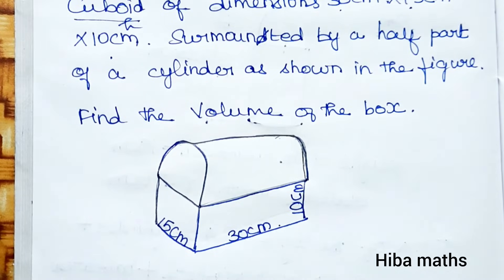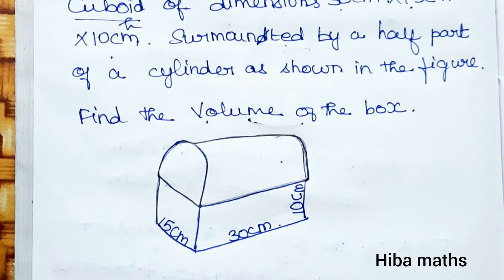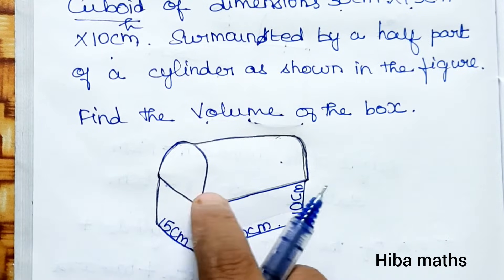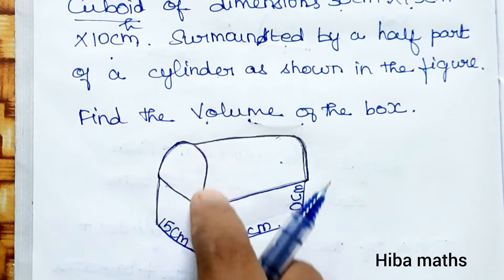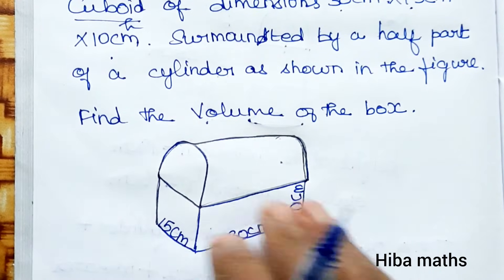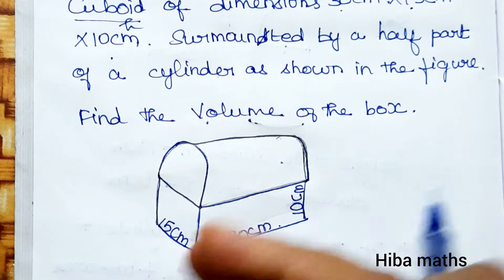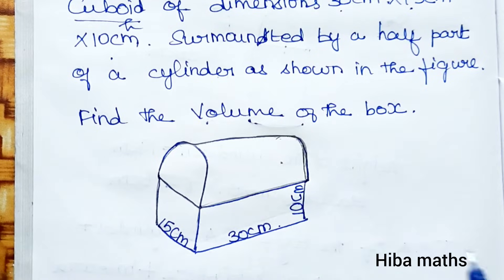We need to find the volume of the box. The diagram shows a cuboid shape with a half cylinder on top. The volume of the box consists of two pieces: the volume of the cuboid plus the volume of the half cylinder.